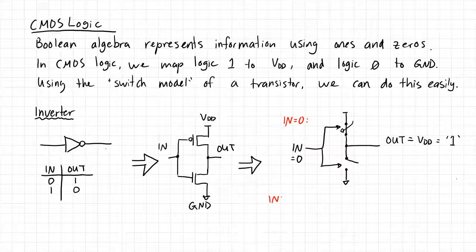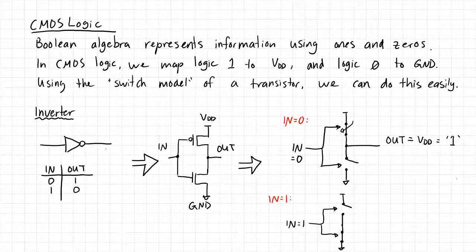Similarly, when input equals logic one, the PMOS device is open and the NMOS device is closed. When the gate of an NMOS device is high or logic one, its switch is closed. When the gate of a PMOS device is high, that device is not on — it's an open circuit. So the output voltage is connected to ground, which is logic zero. When the input is one, we get a logic zero at the output — that's exactly what an inverter is supposed to do.